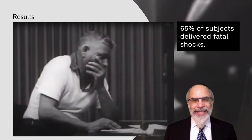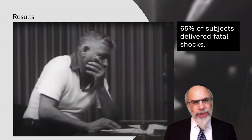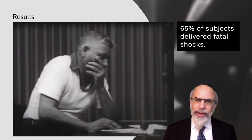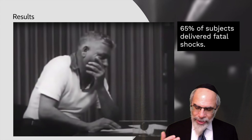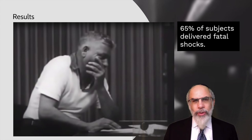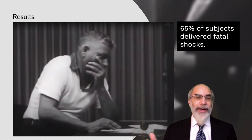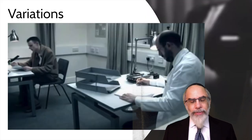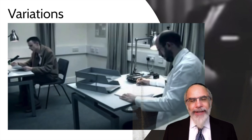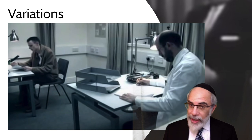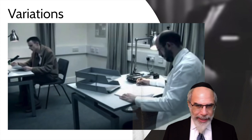The results are terrifying. 65% of subjects would deliver fatal shocks. They would show distress and turn to the doctor saying they didn't think they should continue, but with the lightest of prodding they went back to the task. Two thirds of people off the street in the early 1960s in New Haven, Connecticut were totally willing to kill complete strangers. Milgram had asked experts in advance what percentage would go through with it, and experts said maybe a fraction of one percent — not two thirds. The experiment has been repeated in different countries and always comes back to around two thirds.